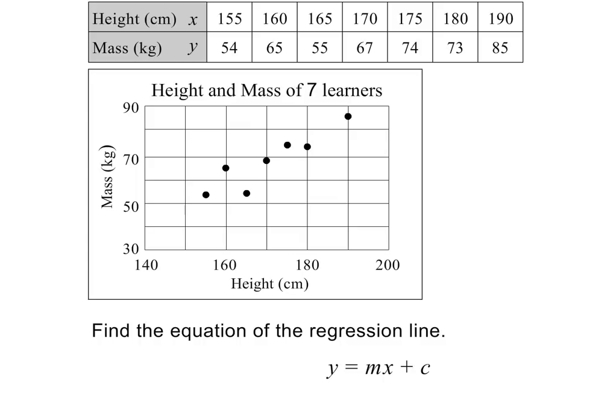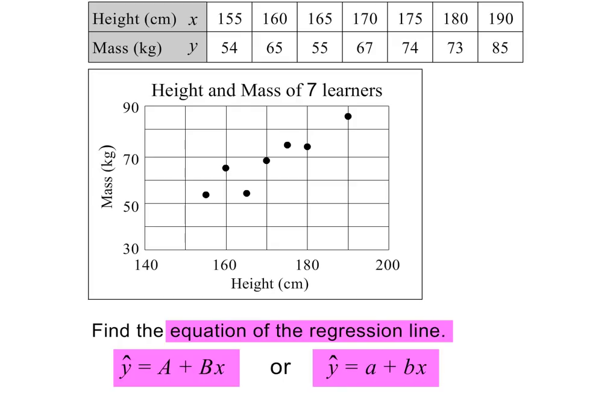By now, you should know that the equation of any straight line is y equals mx plus c, where m gives the gradient and c gives the y-intercept. In statistics, we will use the letter b instead of m, and the letter a instead of c. And not only do we use a and b instead of m and c, we also write the equation in a different order. Some people also use capital letters for A and B. But that's not all. In statistics, they also put a cap on the y. So whenever you see one of these equations, you must know that it is the equation of the regression line for a set of bivariate data.